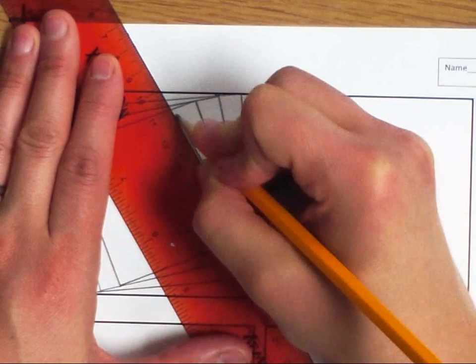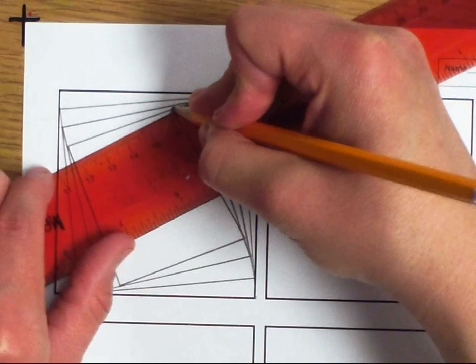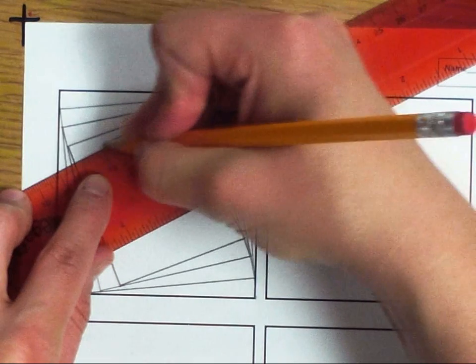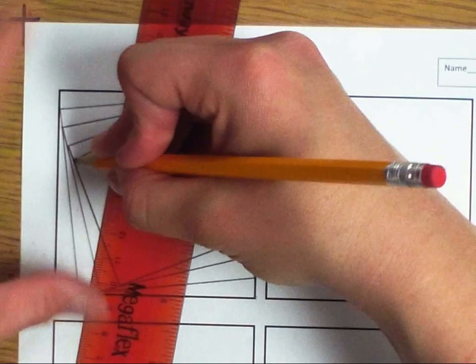And you just continue rotating around and creating right triangles until you get to the very center. And it'll look like a rectangle or a square way tiny in the back.